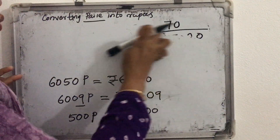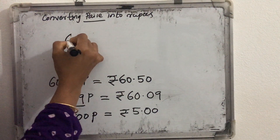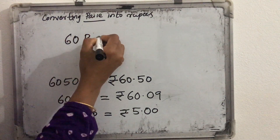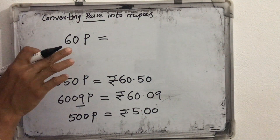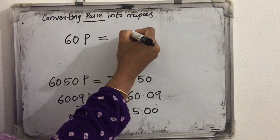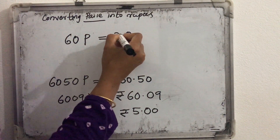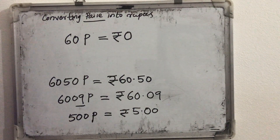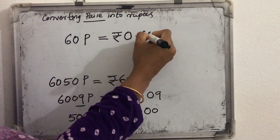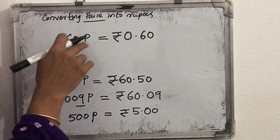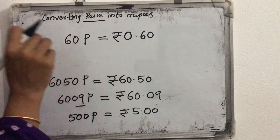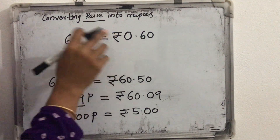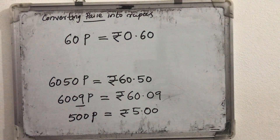Now last one more question — if it is only 2 digits, what will we do? If we convert 60 paise into rupees, how much rupees here? No rupees. So before the decimal point we can write 0, and before that we can write the rupees symbol. So it will be 0.60 — last two places are 6 and 0. After the decimal point we write 60, and before the decimal point there are no rupees, so we write 0 rupees. So it will represent 60 paise.